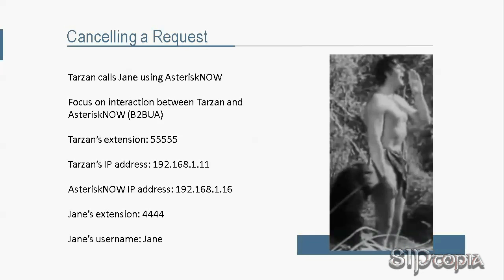In this call, Tarzan has the extension 55555 and the IP address of 192.168.1.11, whereas the Asterisk Now PBX has the IP address of 192.168.1.16. Similar to part 4, since Asterisk Now is a back-to-back user agent acting like a user agent server for Jane, we will be focusing only on the communication between Tarzan and the Asterisk Now PBX. For the record, Jane has the extension 4444, but the system allows users to call others by name, so Tarzan dialed Jane to reach Jane.